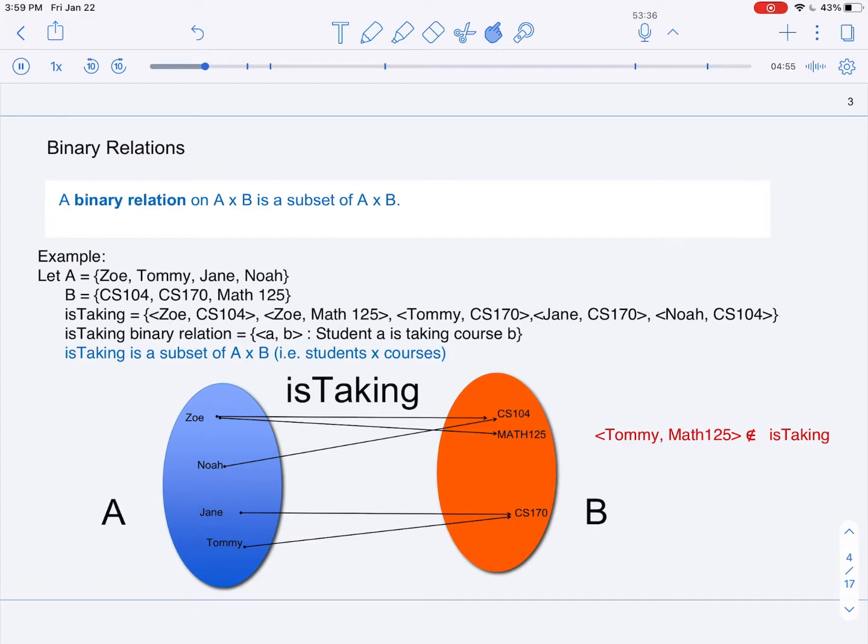And Zoe, Math-125, to indicate Zoe is taking Math-125. Tommy, CS-170, because Tommy is taking CS-170.